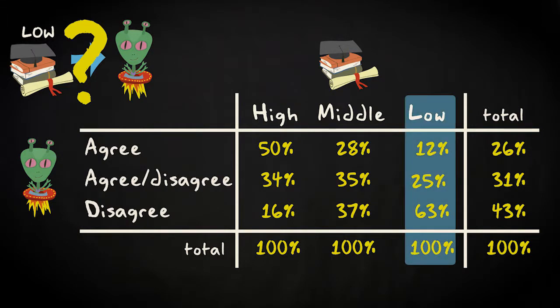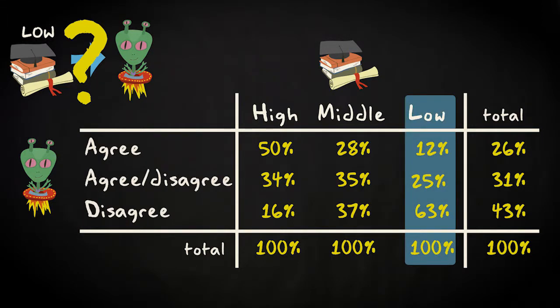If we focus on respondents with a low level of education, we see that only 12% agrees with the statement that it's likely that there is extraterrestrial life. However, 63% disagrees with this statement.